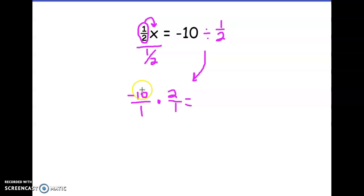I am then going to multiply straight across and a negative times a positive is a negative. 10 times 2 is 20 and 1 times 1 is 1 and we know that negative 20 divided by 1, x is equal to negative 20.